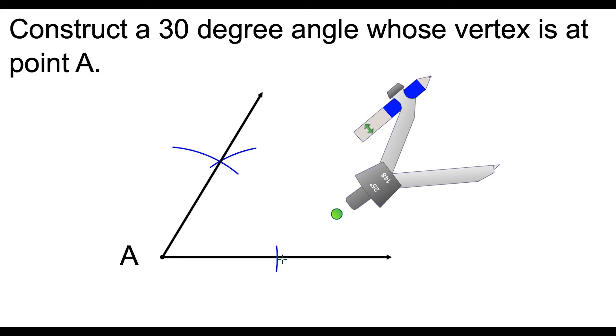And the concept behind this is that to build a 30 degree angle, what we know right now is that because we did the equilateral triangle construction, this angle over here is 60 degrees. So now all we have to do is cut that angle in half.